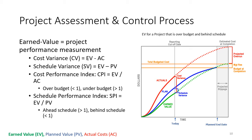Looking at this chart, we are behind schedule — the green line is below the blue — and we are above cost — the red line is above the blue. Using those two projections, we can project when we will complete the project in terms of both cost and time, shown on the right-hand side as the projected schedule overrun and budget overrun.